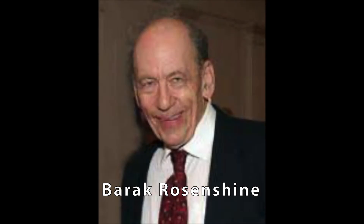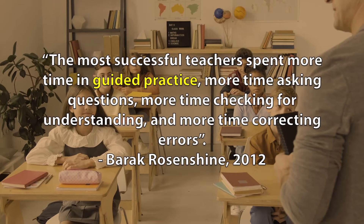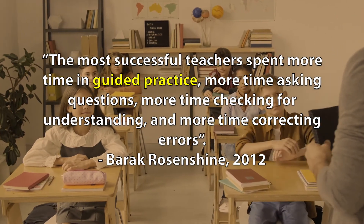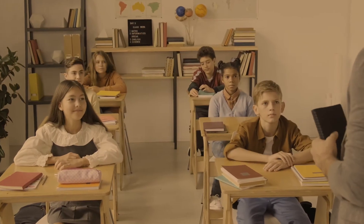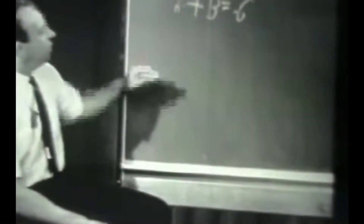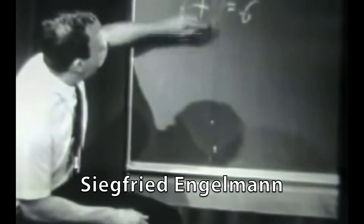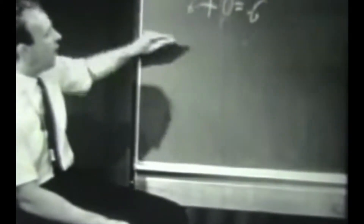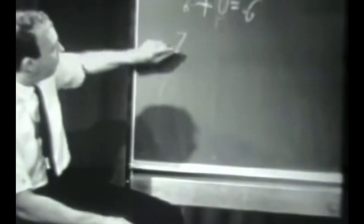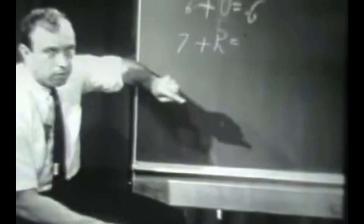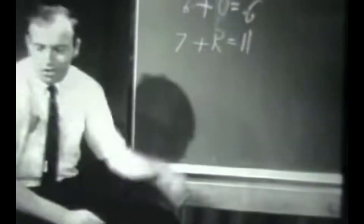Barak Rosenshine was a professor in the Department of Educational Psychology at the University of Illinois. His teaching model of guided practice was developed by American educator Siegfried Engelmann in the 1960s. His theory is that clear instruction should eliminate misconceptions and could lead to more effective and efficient learning. It is also referred to as direct instruction.